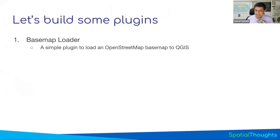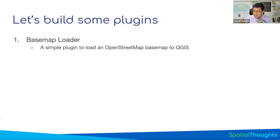We're going to build two plugins in this course. The first one is a plugin called Basemap Loader. This plugin will show you the structure of a plugin. We'll understand how to make all the files needed for a plugin, install it, and it will give you a button on the toolbar. When you click the button, it's going to load the OpenStreetMap basemap into QGIS.